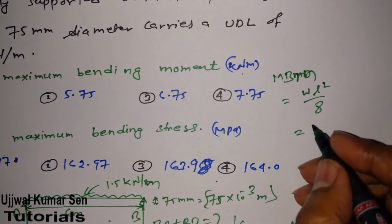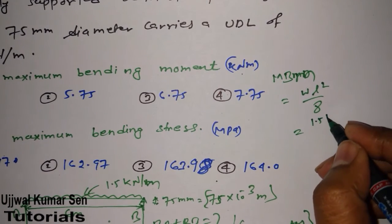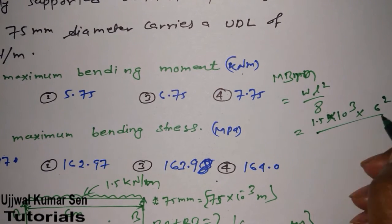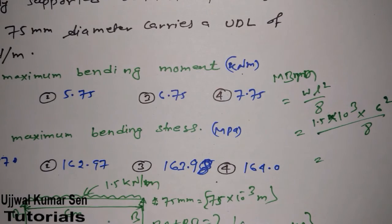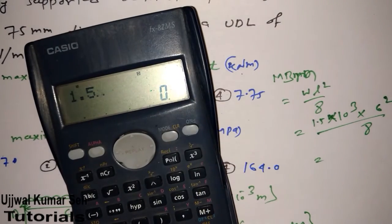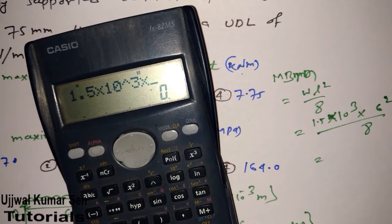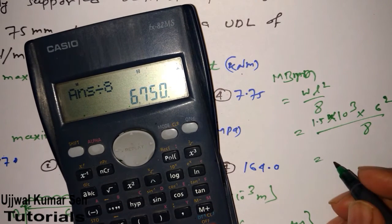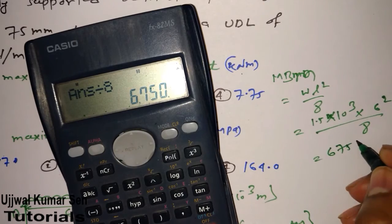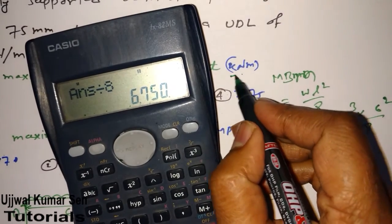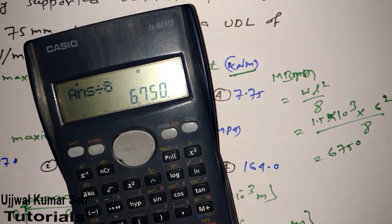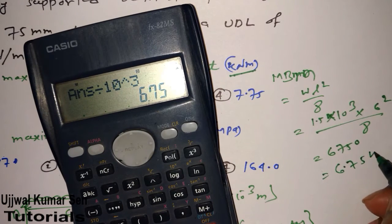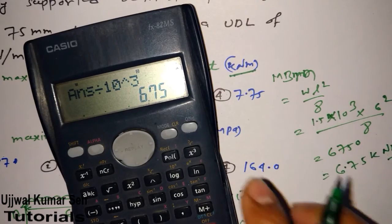Here w = 1.5 kN/m = 1.5 × 10³ N/m, and L = 6 meters. So M_max = 1.5 × 10³ × 6² / 8. The calculation gives 6750, and since the answer is required in kilonewtons, dividing by 10³ gives 6.75 kilonewton-meter.